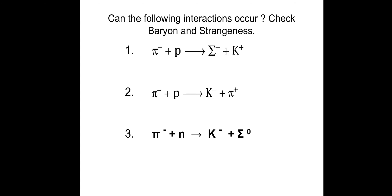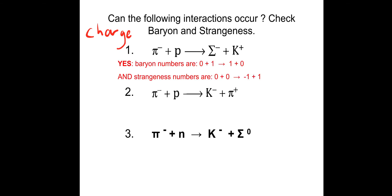Check baryon number, strangeness, and charge for these interactions. First: charge — minus and plus on the left, minus and plus on the right — conserved. Baryon number: 0 plus 1 on the left; plus 1 for the sigma particle and 0 for the K plus on the right — conserved. Strangeness: 0 and 0 on the left; minus 1 and plus 1 on the right — conserved. So yes, that interaction can occur.